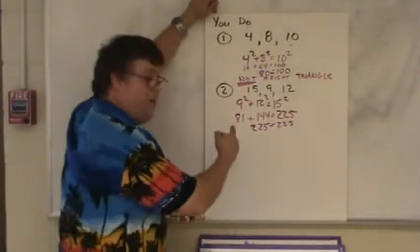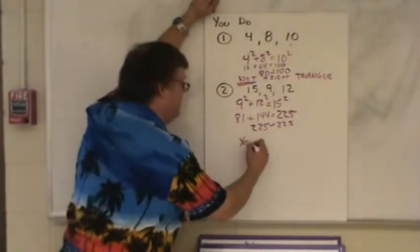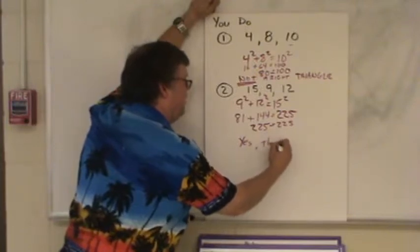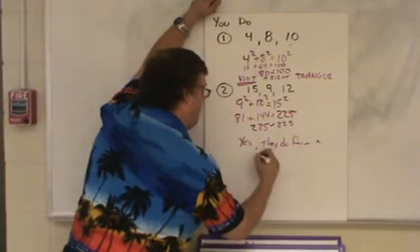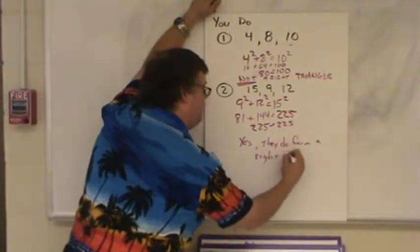81 and 144 added together gives me 225, which does equal 225. And since that is, they are equal, then yes, they do form a right triangle.